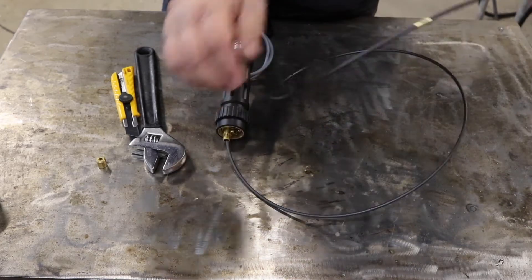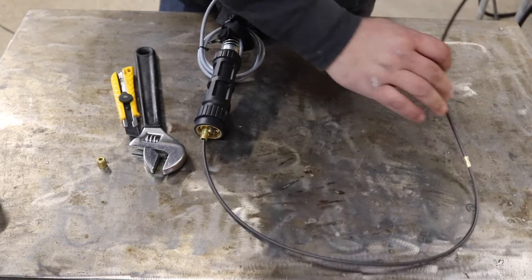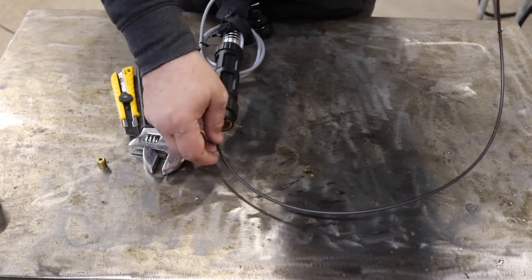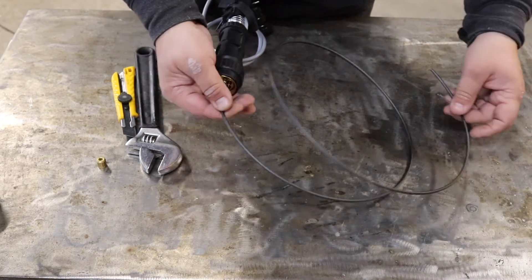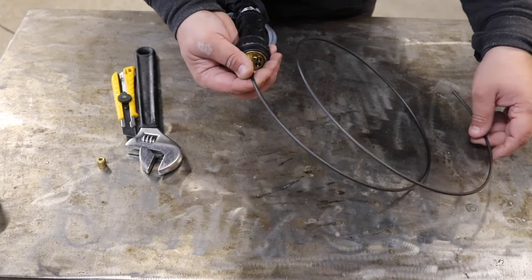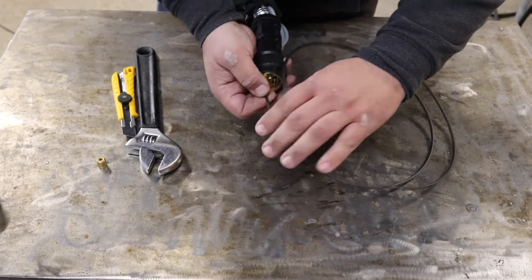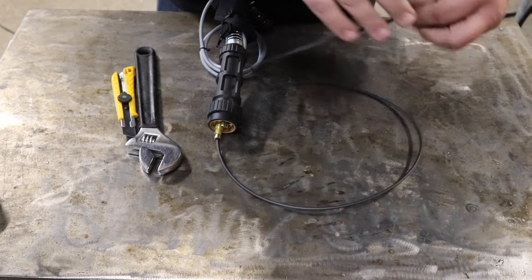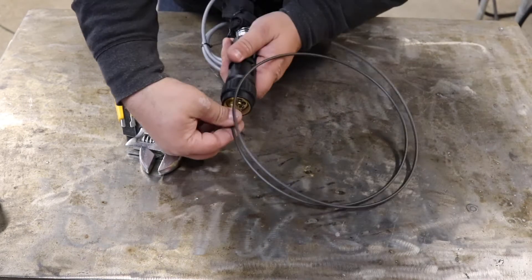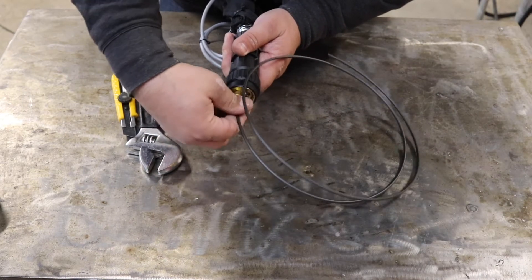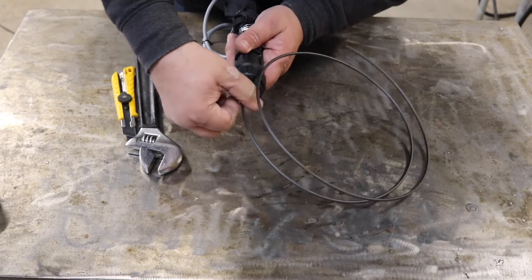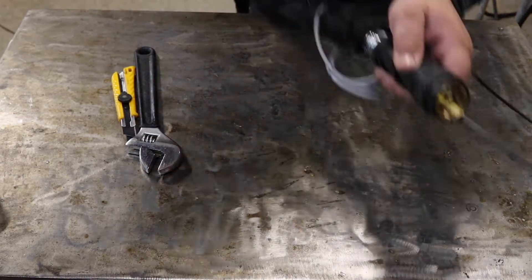Now before you tighten this up, I would do a quick check. Undo the consumables and make sure it's really all the way to the front. I'm just going to put this on here hand tight like one turn so it doesn't slip out without crushing the collet yet.